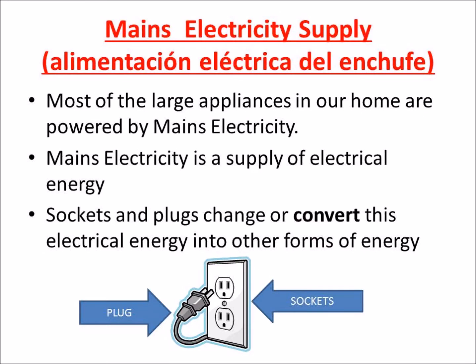One of the sources of electricity is mains electricity supply. It's the place where we can get electricity in our house, for example. Most of the large appliances in our houses are powered by mains electricity. Mains electricity is a supply of electrical energy. Sockets and plugs change or convert this electrical energy into other forms of energy.